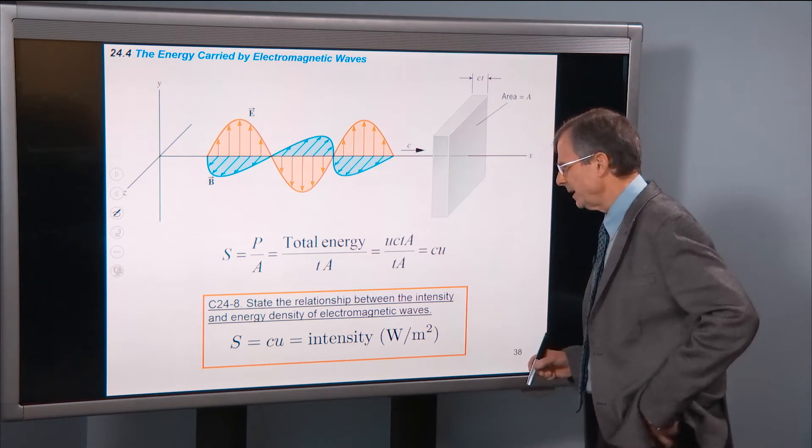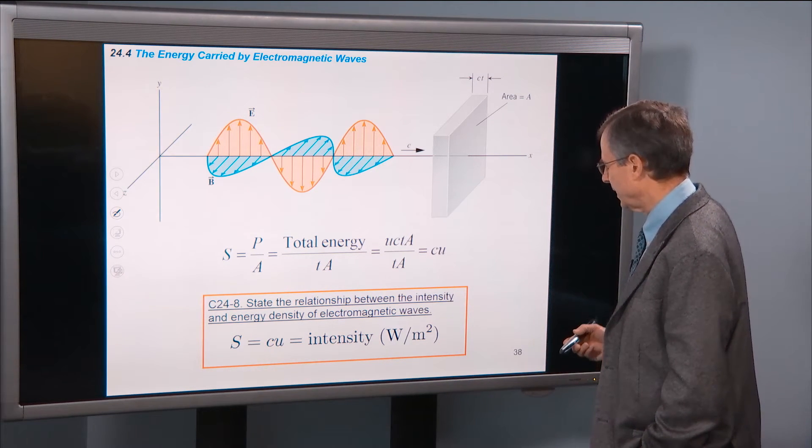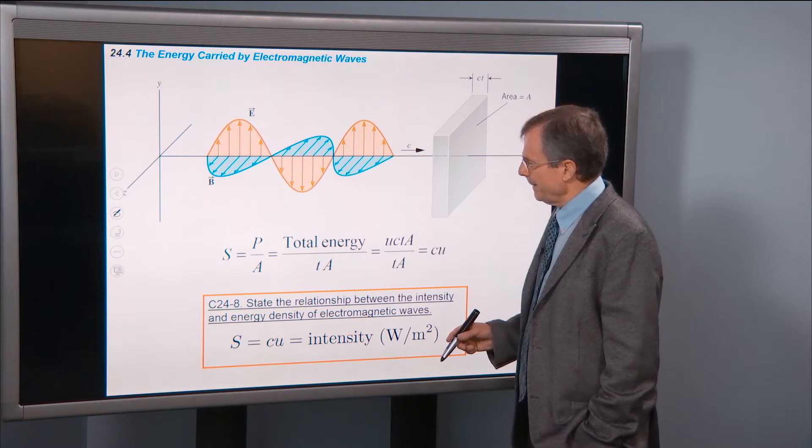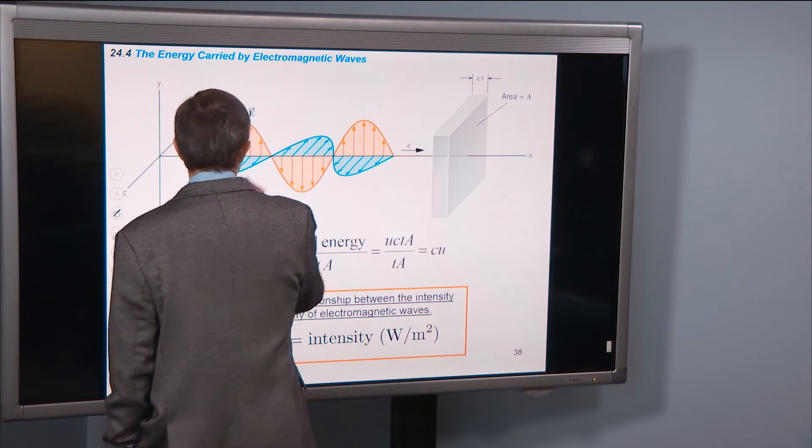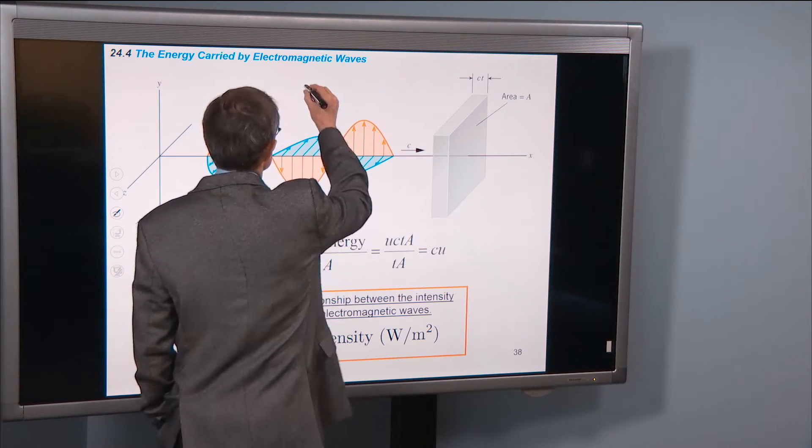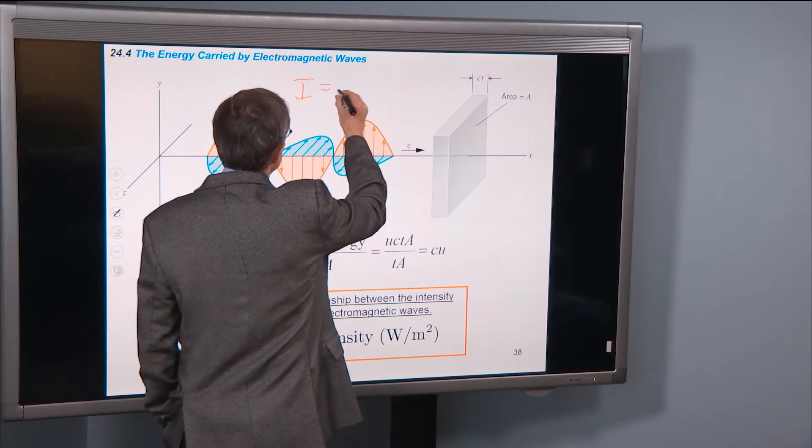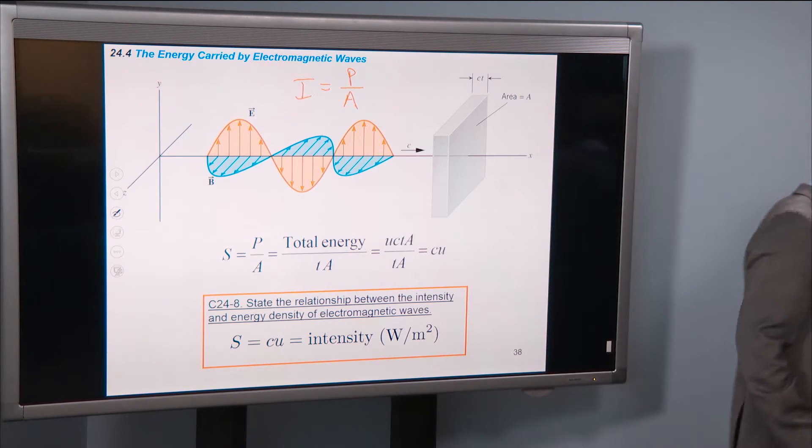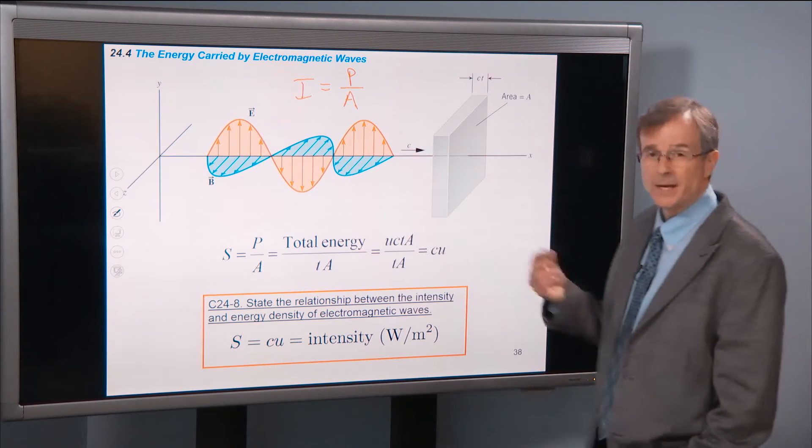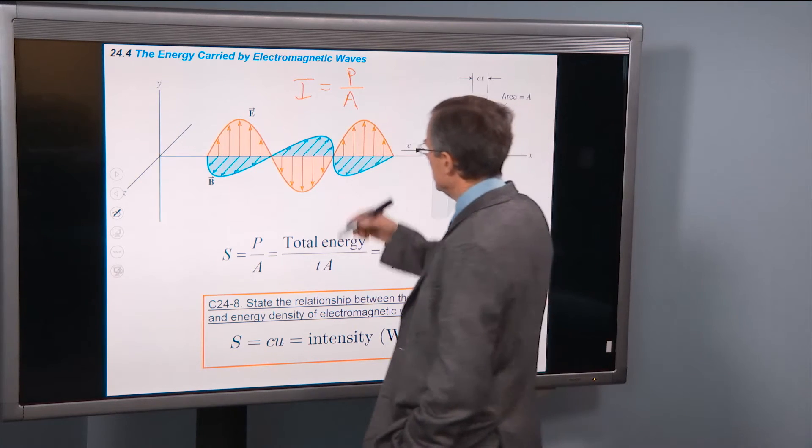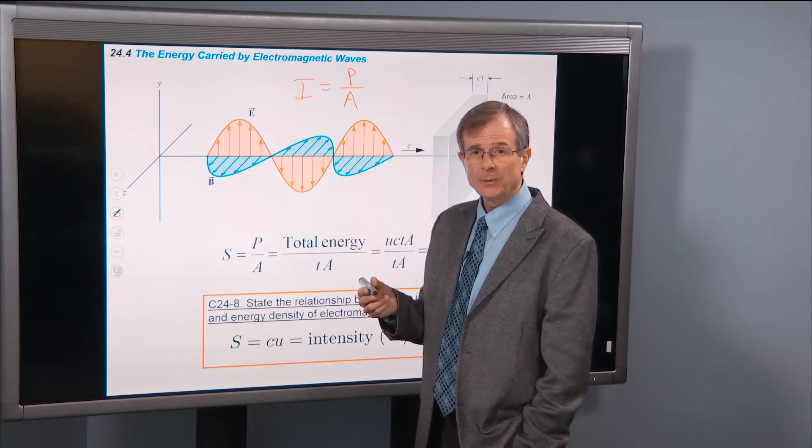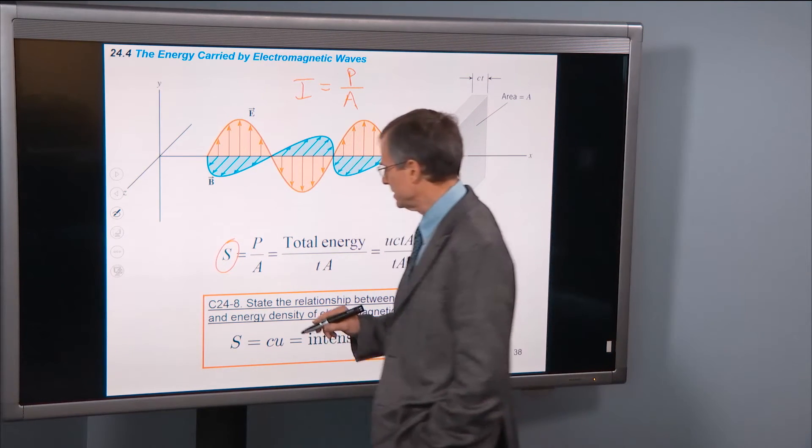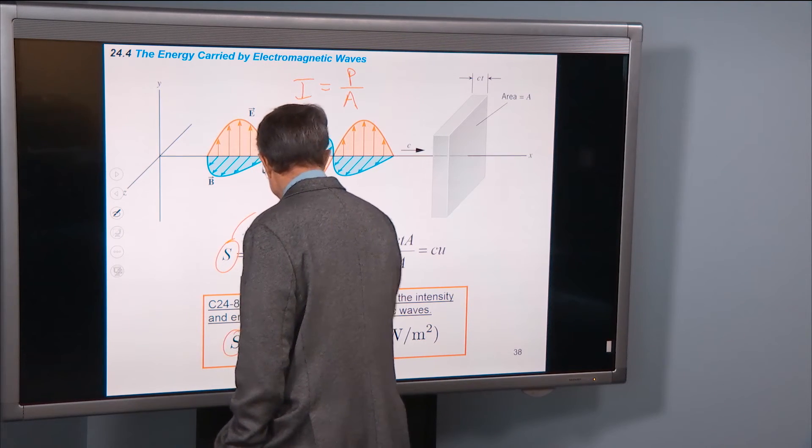All right. State the relationship between the intensity and energy density of electromagnetic waves. So the intensity, back when we talked about sound, we talked about intensity. We defined it as a power per unit area. So it's measured in watts per square meter, and that's intensity. For electromagnetic waves, for historical reasons, we use s to describe the intensity.